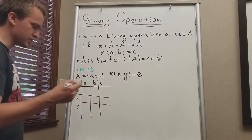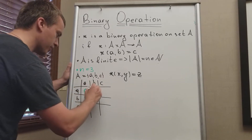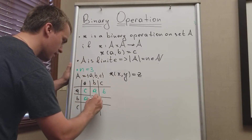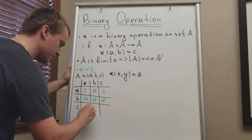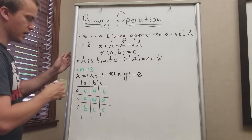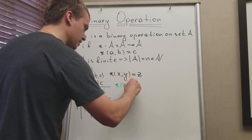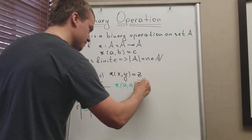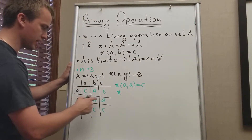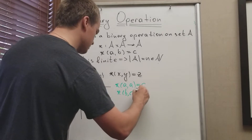Let's just fill in the table like this. For a*a I will get c; for the next entries I will get a, b, a, a, a, b, c. So what does it mean? It means if I'm going to take the binary operation of a and a, I'm going to map this to c. If I'm going to take the binary operation of b and c, I'm going to map this to a.